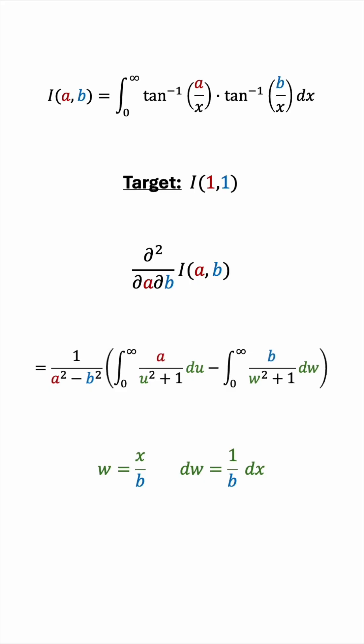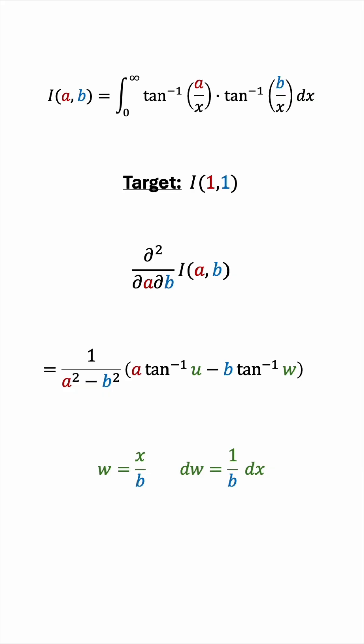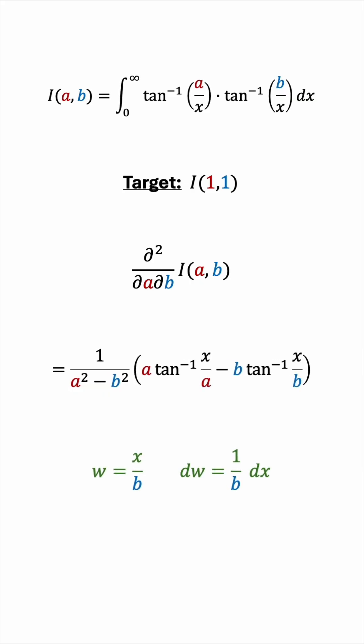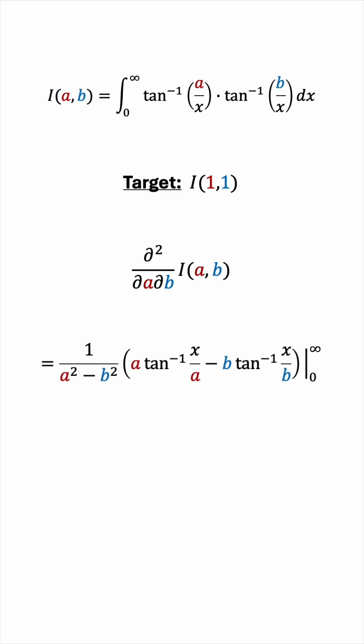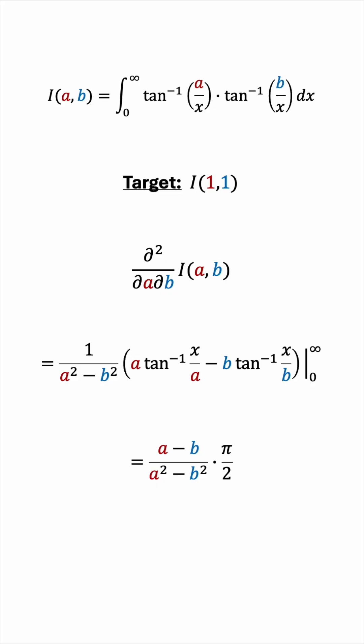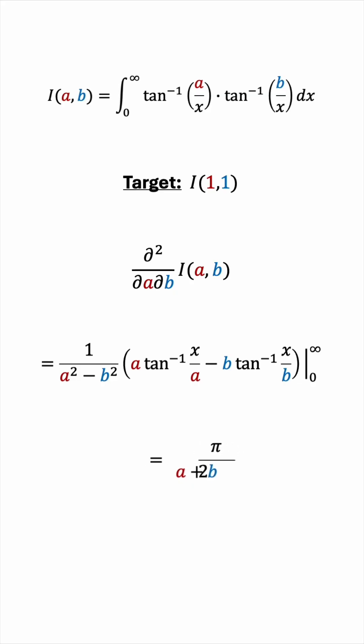Now we can integrate very easily. The first integral becomes a times arctan(u), and the second becomes b times arctan(w). Resubstituting in terms of x and applying the bounds from 0 to infinity — taking the limit as x approaches infinity — we know that arctan approaches π/2 as the argument goes to infinity, and arctan(0) = 0. This works out, and we can factor out π/2, then factor the difference of squares in the denominator and cancel the (a − b) terms, leaving us with π over 2(a + b).